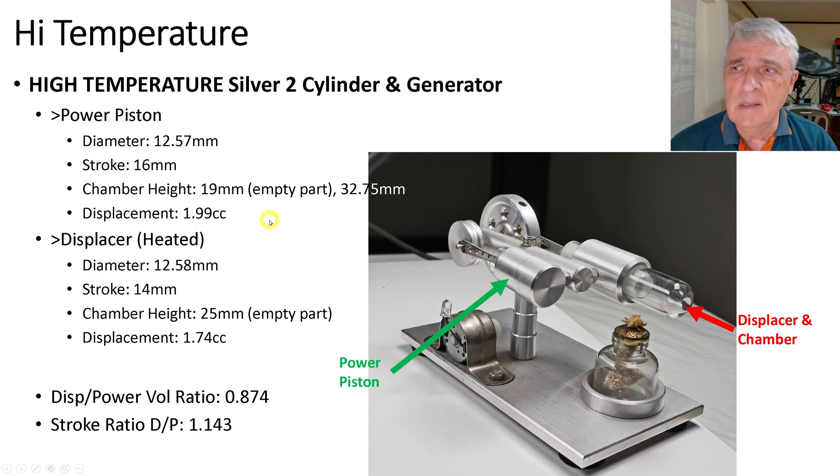The displacer, which is over here, the diameter across here, across this glass tube, is 12.58 millimeters. The stroke back and forth is 14 millimeters, a little bit different you notice. The chamber height, so this direction, I'm just measuring the empty part, the part that opens and closes, is 25 millimeters. And the displacement is 1.74 cubic centimeters. The displacement to power volume ratio is 0.874. And the stroke ratio is 1.143.